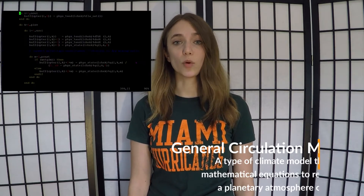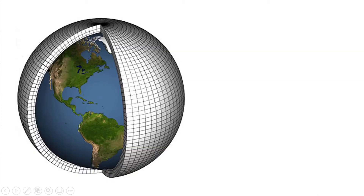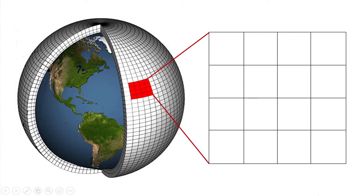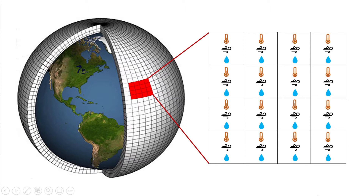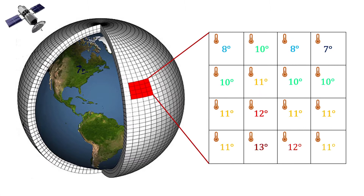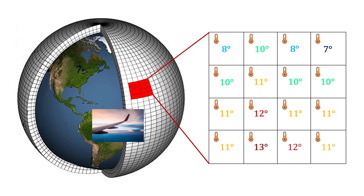A climate model, or general circulation model, is built on a computer with lines and lines of code that solve equations. To understand the atmosphere, we have to break it up into cubes. We can assign values of variables like temperature, wind, and humidity to each cube, typically based on real observations that we get from satellites, weather balloons, airplanes, etc.